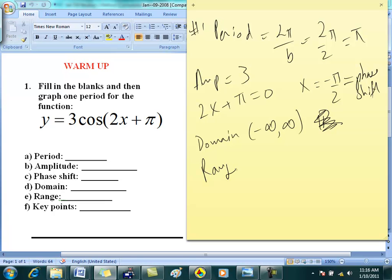And then range for this graph, for this function is going to be -3 to +3. In other words, it's bouncing back and forth between -3 and +3. Okay, so that's your range.